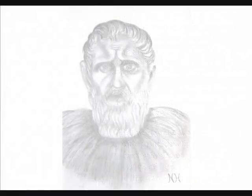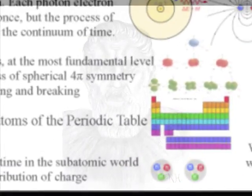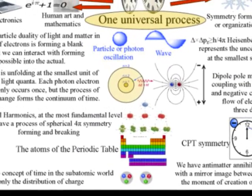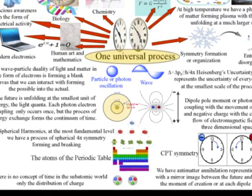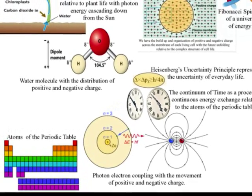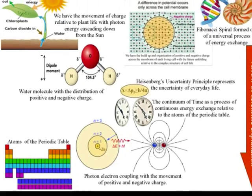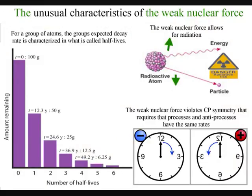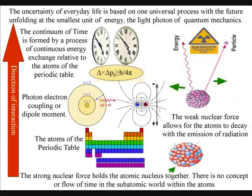In ancient Greece, it was believed that the atoms were indestructible. But now we know this is not so. Atoms that decay with an unstable atomic nucleus emitting radiation could represent a problem for a theory that says the future is unfolding photon by photon relative to the atoms of the periodic table. But the weak nuclear force explains radioactive decay with some very unusual characteristics that can only really be understood as part of a logical process if what we see and feel as the continuum of time is formed by photon-electron interactions.